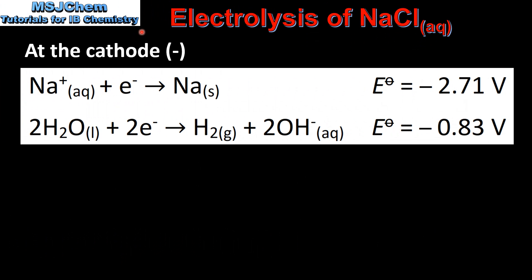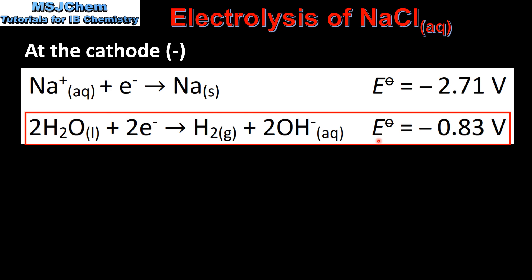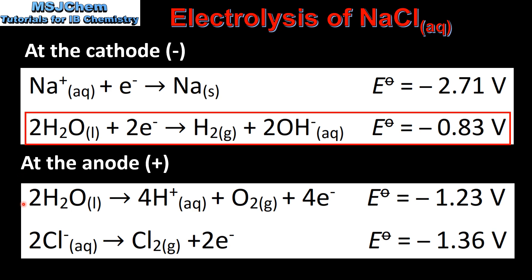Next we look at the electrolysis of aqueous sodium chloride solution. The two possible reactions at the cathode are the reduction of sodium ions to form sodium metal and the reduction of water to form hydrogen gas. Just like in the previous example, the reaction with a more positive electropotential will take place, therefore we'll have the reduction of water to form hydrogen gas.